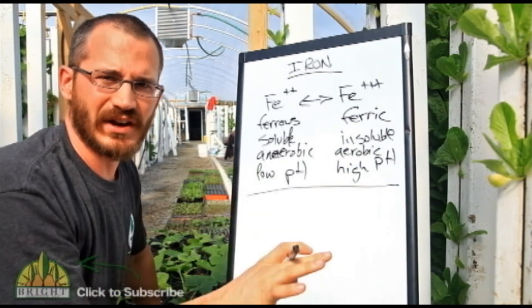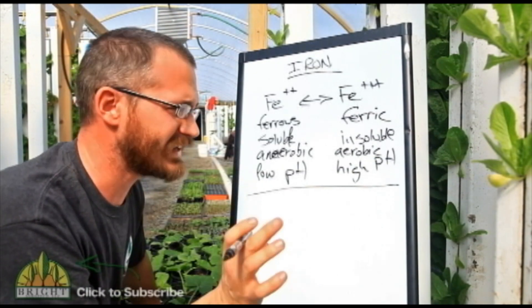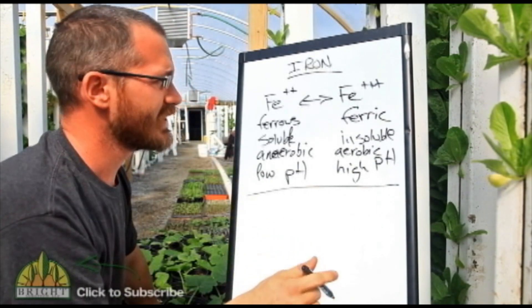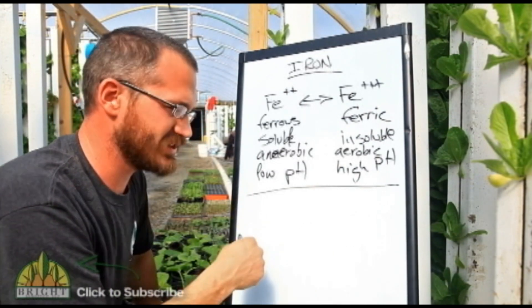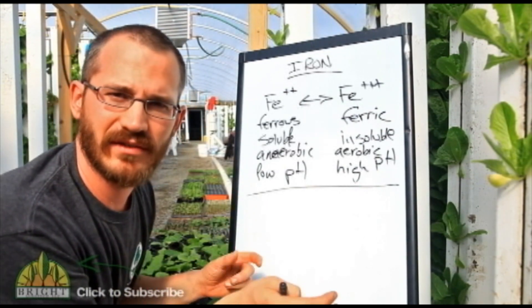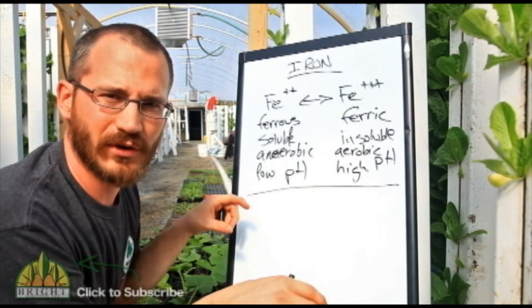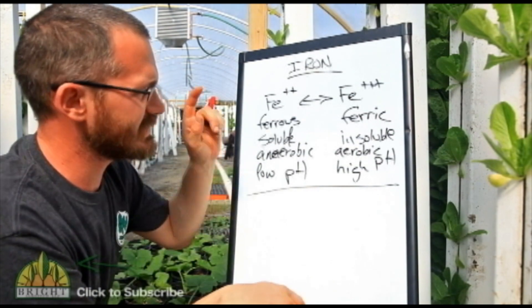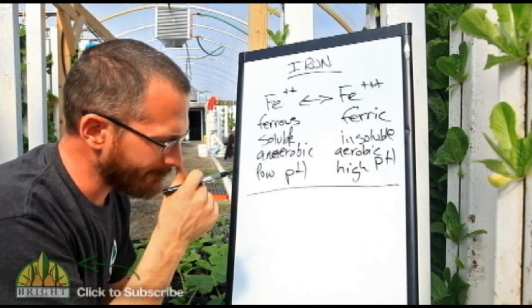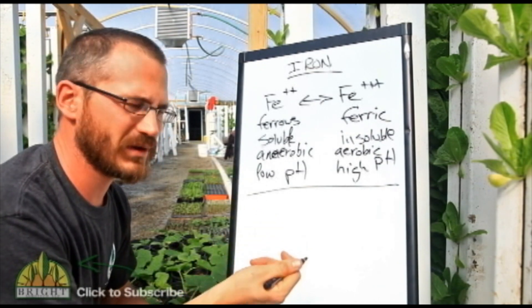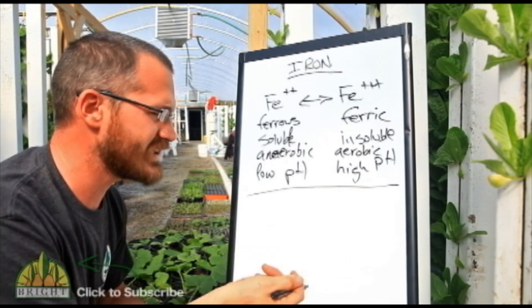This is not uncommon in the plant world, and over time plants have developed a lot of really interesting ways to get iron out of the system. One thing that some plants will do is they'll actually secrete hydrogen ions across their roots, so they'll acidify the water right around their roots, and what that does is make iron more available. They've also developed really interesting compounds called chelating agents.